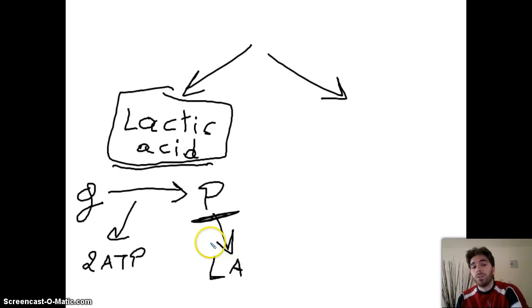This lactic acid will start to build in our muscle, and that's what will cause cramps. This happens also in bacteria - the one that makes yogurt does the same thing and makes lactic acid, which transforms milk into yogurt.